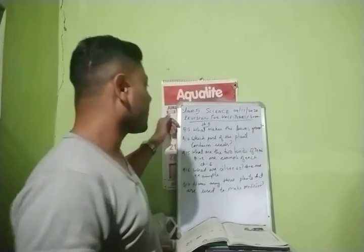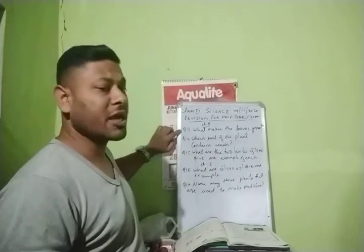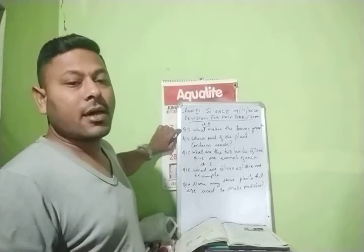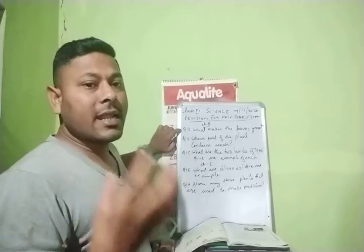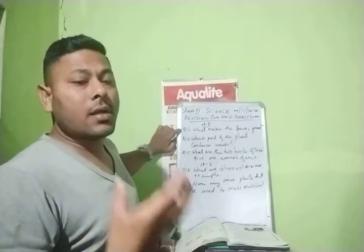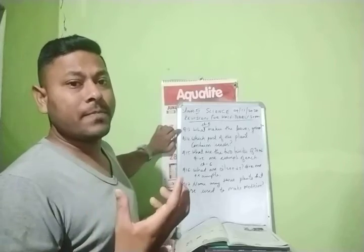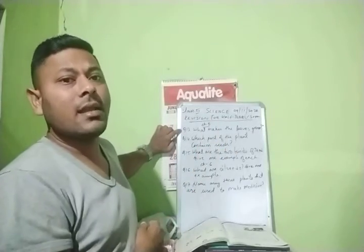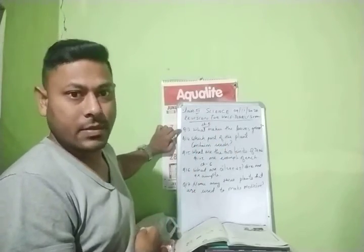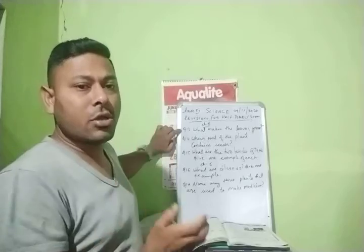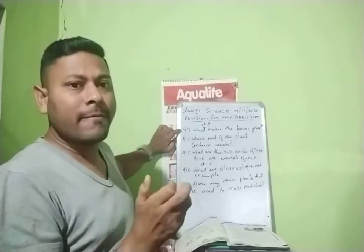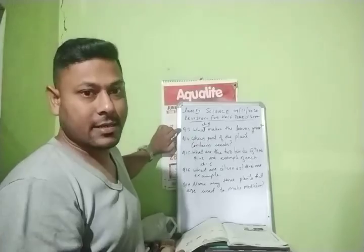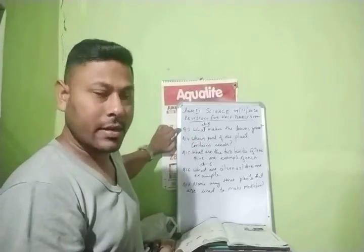Chapter number 5, question number 13: What makes the leaves green? The green leaves contain chlorophyll, which helps the plants to be green in color. The chlorophyll present inside the leaves makes the leaves green in color.